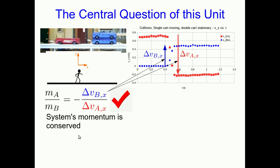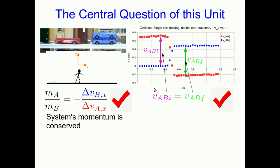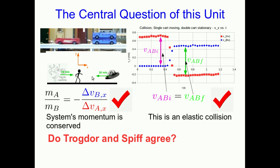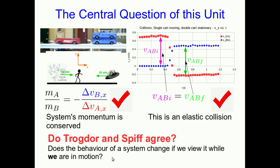From this, the person would conclude that the system's momentum is conserved. They can also see from their measurements that the relative speed of the carts before the collision is the same as the relative speed after, so they would also conclude that this is an elastic collision. The central question of this unit is: remember Trogdor and Spiff, who are moving relative to this person — do Trogdor and Spiff agree? Does the behavior of a system change if we view it while we are in motion?